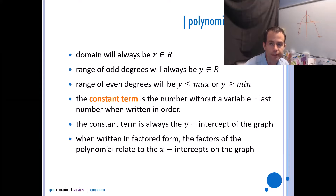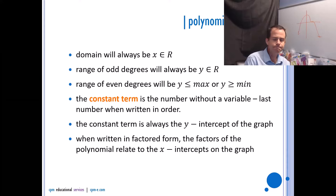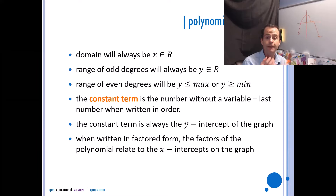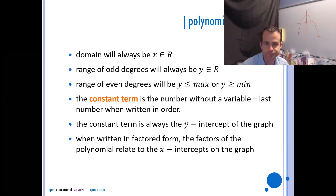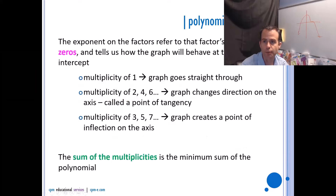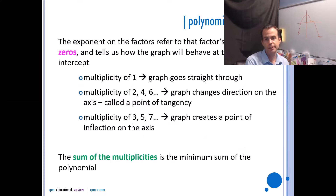The constant term is the number without the variable — it is the last number when written in order. The constant term is always the y-intercept. When we write in factored form, the factors always relate to the x-intercepts of the graph. We also want to talk about multiplicities of zeros. The exponents on each factor refer to that factor's multiplicity, and that tells us how the graph will behave at the x-intercept.